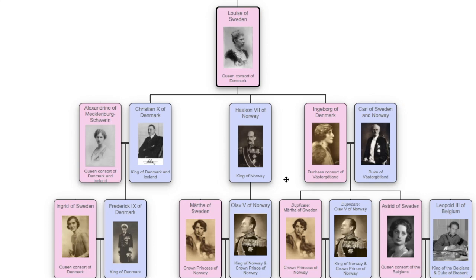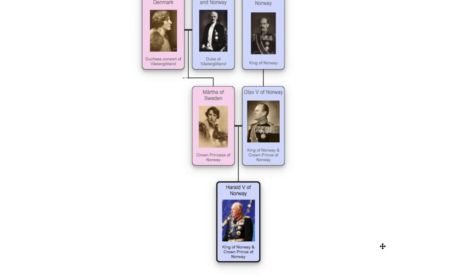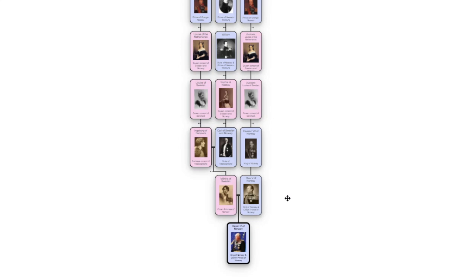There you have it — the three different lineages of Harald V to John William Frisaux. Depending on how you count, Frisaux could be his sixth or seventh great-grandfather. In the next episode, we will look at how King Carl XVI Gustaf of Sweden is descended from John William Frisaux.